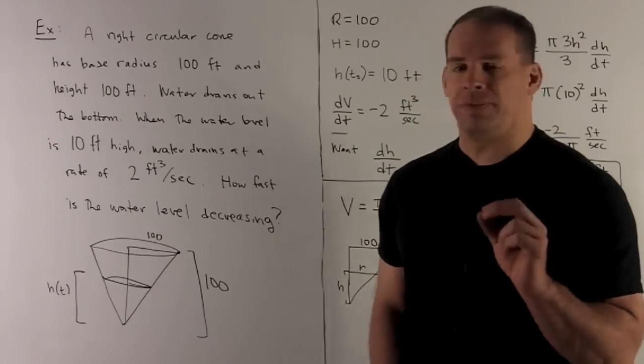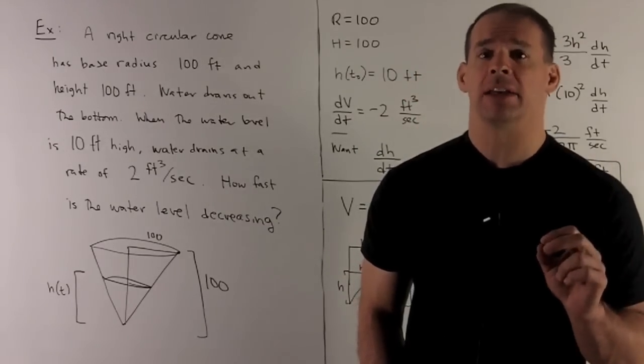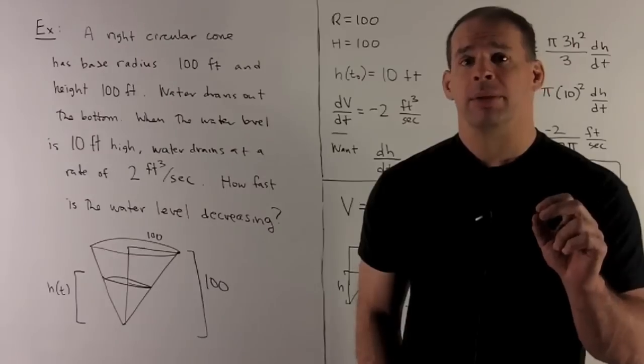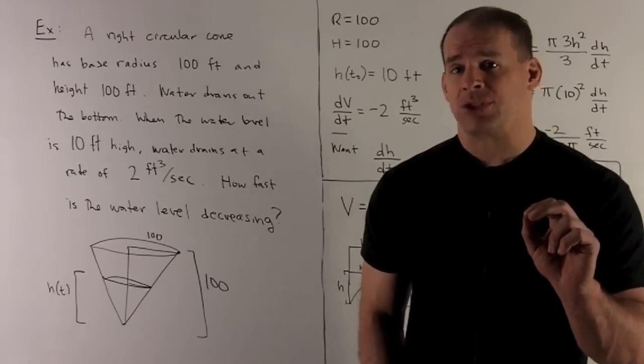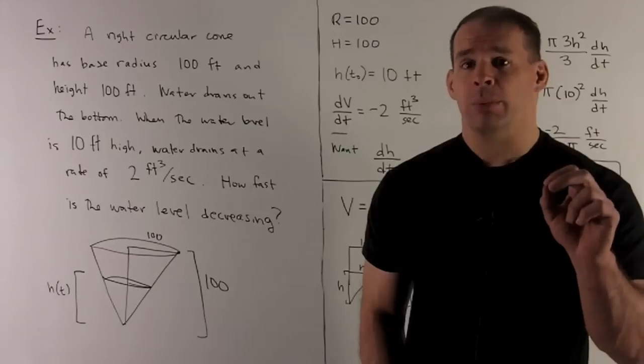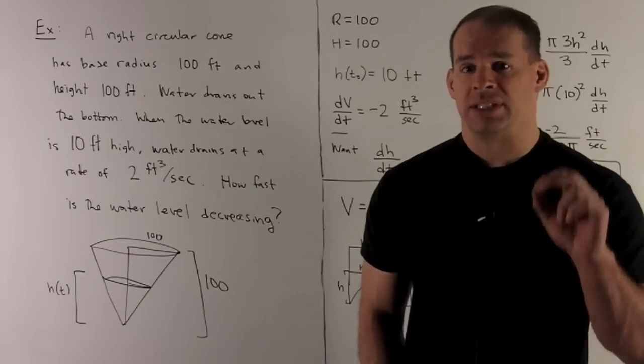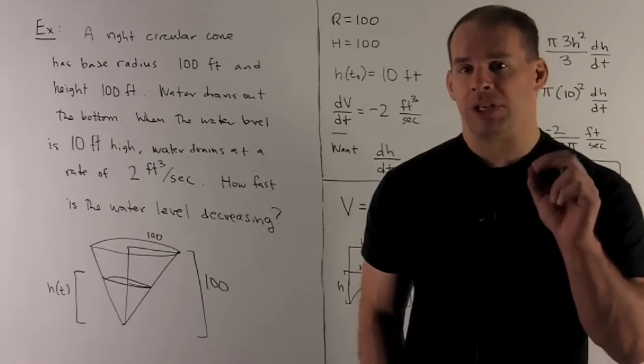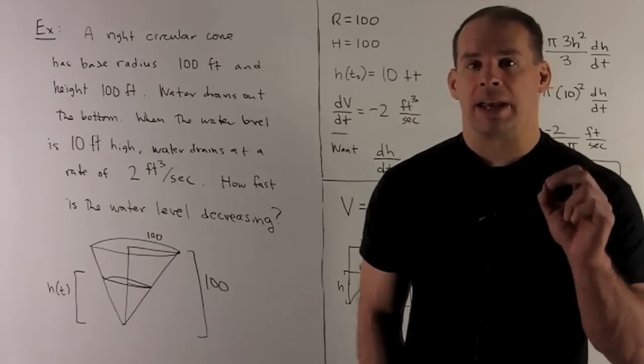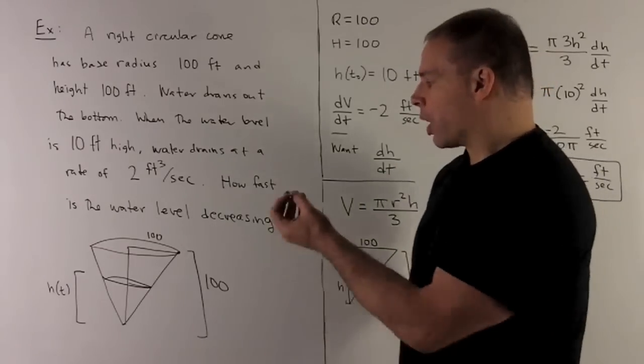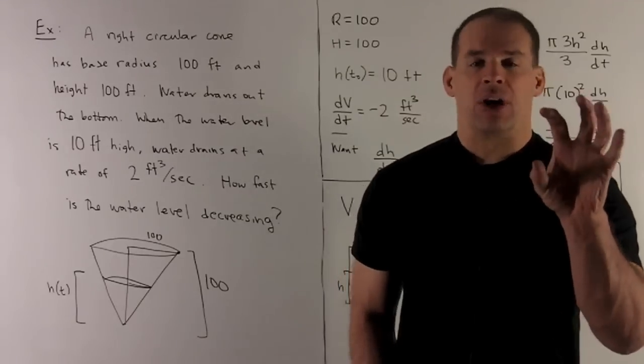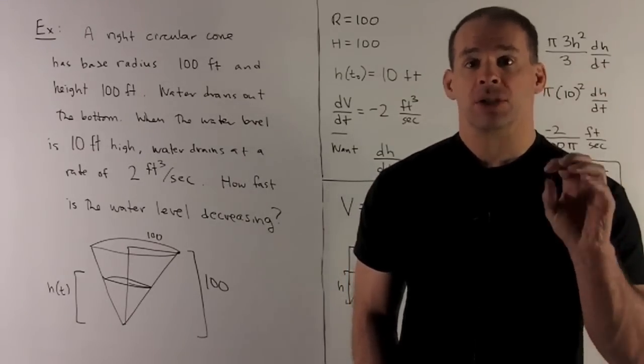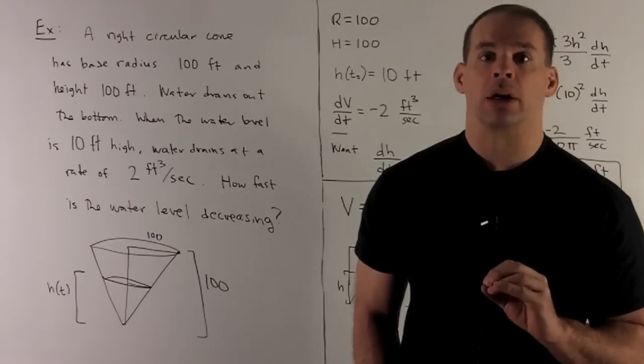Water drains out at a rate of 2 feet cubed per second. That's telling me, first off, that's going to be a rate of change, volume with respect to time, so it's dV over dt. That's going to be minus 2 feet cubed per second. Why minus? Because, if you notice, water is going to drain out. The volume of our cone is going to get smaller and smaller as we lose water.